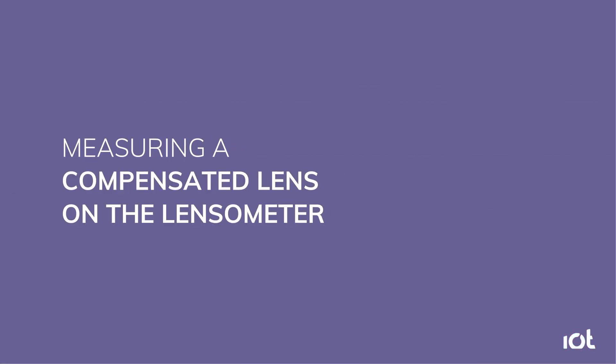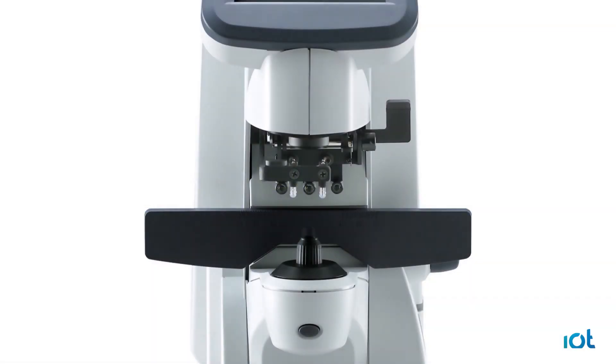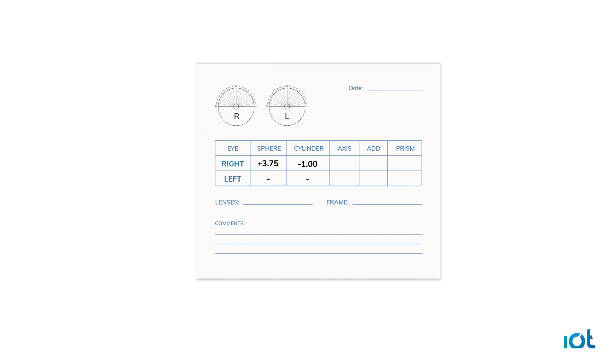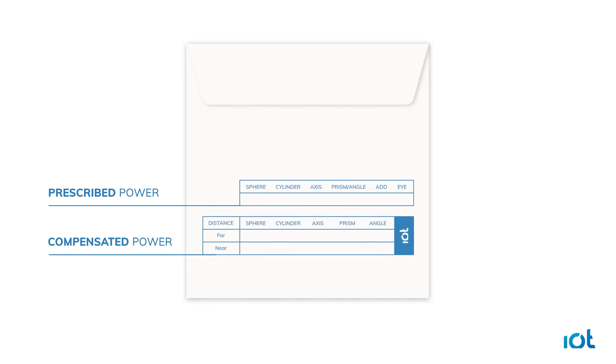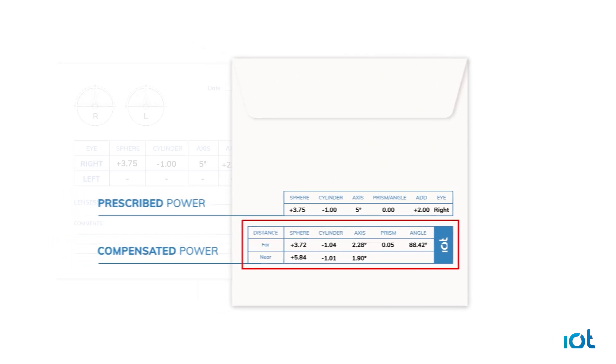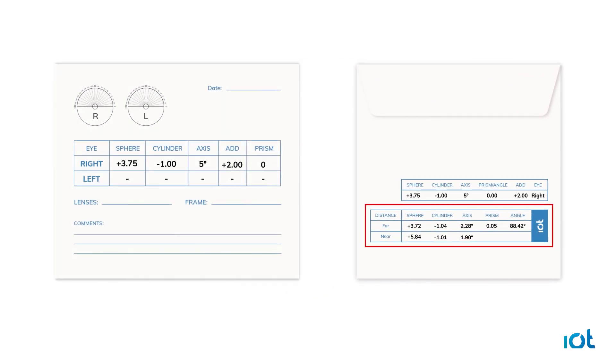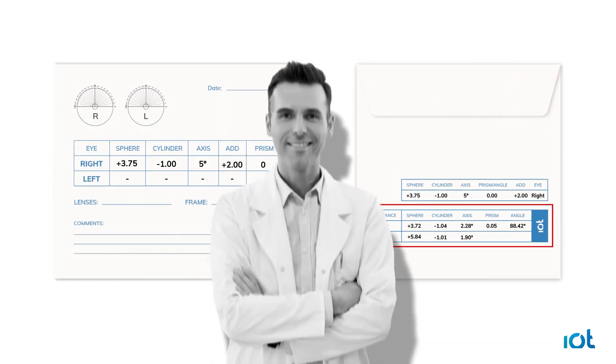Remember, a lensometer does not perceive power in the same way as the human eye. It measures power at a perpendicular angle. You must use the compensated power provided by your laboratory for the final inspection of completed compensated lenses. This change in power is needed to adjust for deviation when light reaches the lens at angles that are not perpendicular. It ensures sharp vision in real life. Now you understand why power in compensated lenses does not match what you ordered from your laboratory.